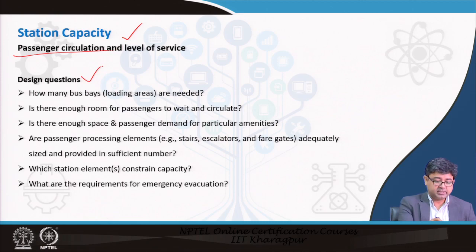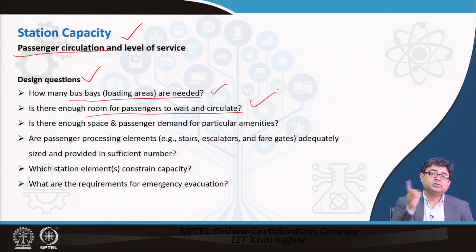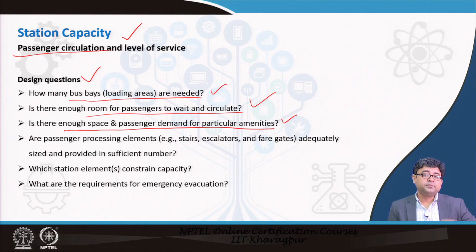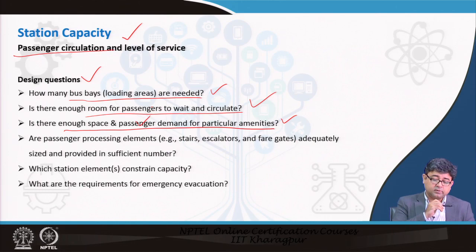Here are questions you need to answer for passenger circulation design: How many bus bays or loading areas are needed? Is there enough room for passengers to wait and circulate? Is there enough space and passenger demand for particular amenities? For example, if there are a lot of elderly people accessing a stop, you may need to put in a bus shelter and benches even if the line capacity does not strictly require it — because the passenger demand calls for it.